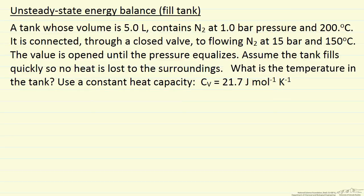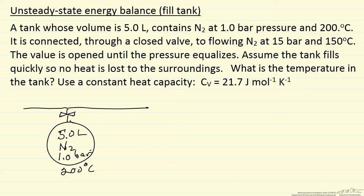In this problem we're going to solve an unsteady state energy balance. The particular system is a tank that is connected by a valve to a flowing gas line. The tank is 5 liters and starts out with nitrogen at 1 bar pressure and 200°C. We have nitrogen flowing at 15 bar pressure continuously flowing through this pipe, and this nitrogen is at 150°C.